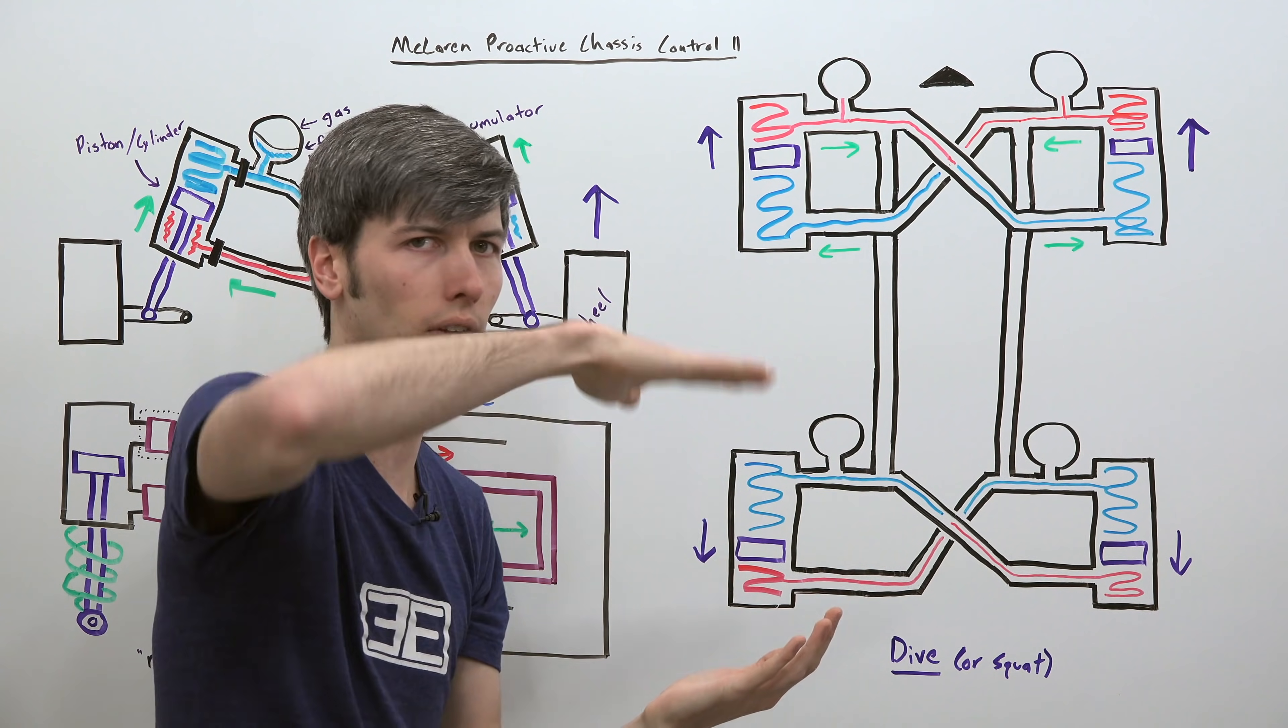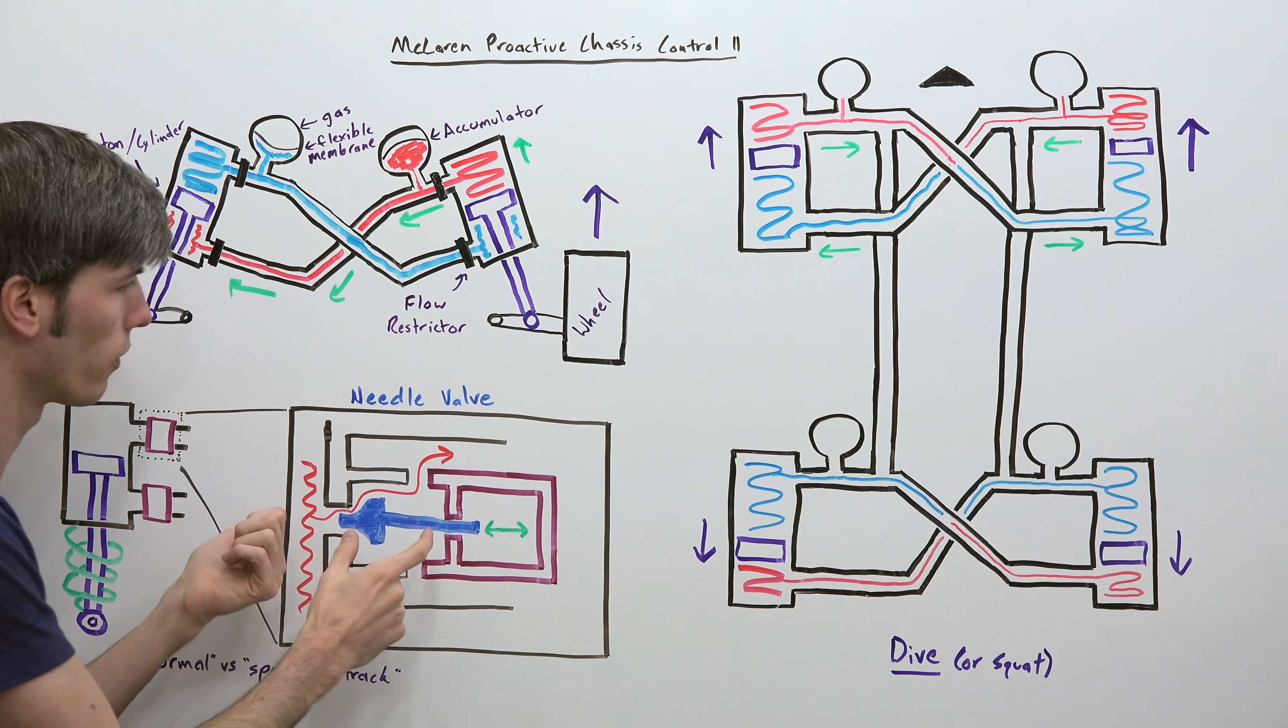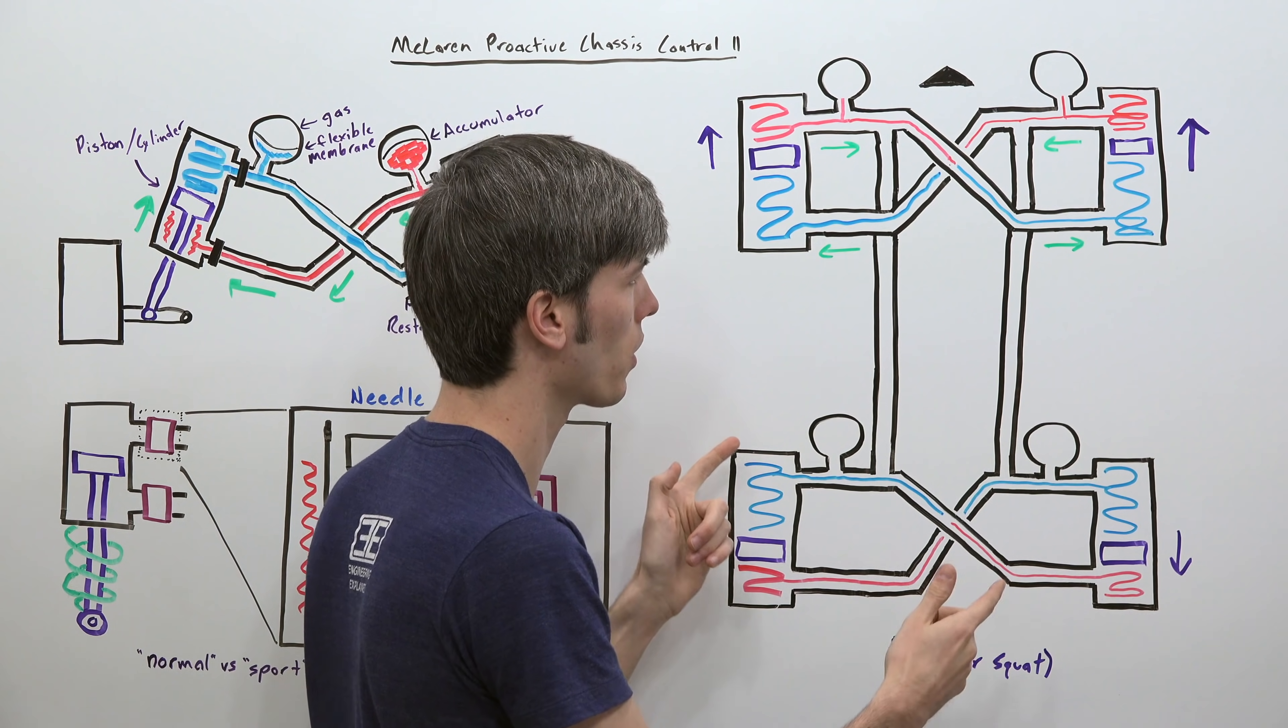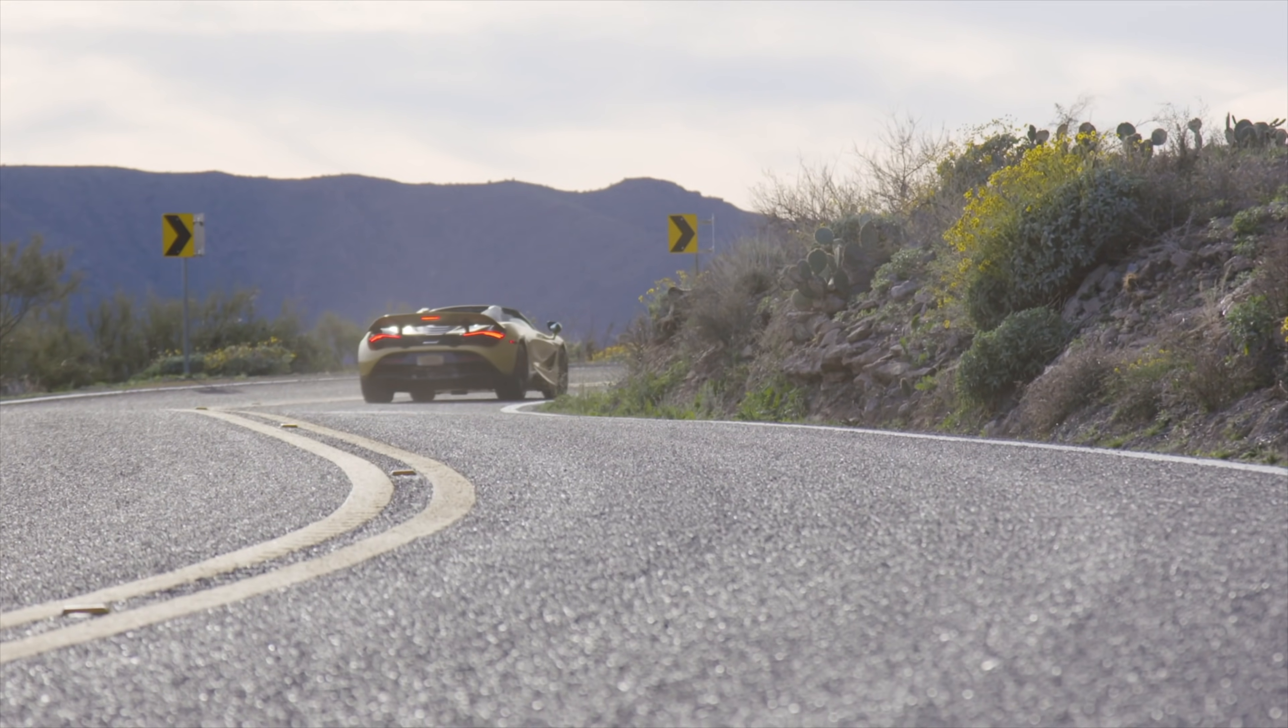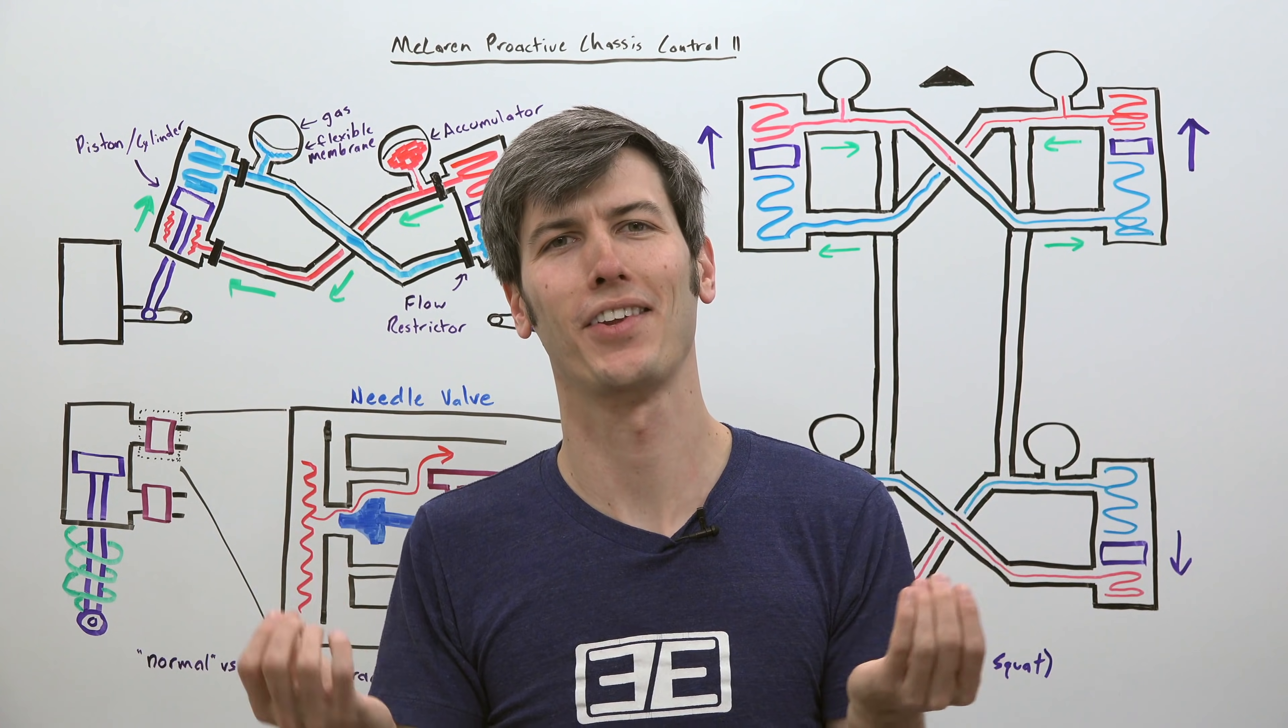Now of course if you're driving around on a track you don't want the car bouncing forward and back like that every time you're accelerating, braking. And so you can minimize this by changing this needle valve. So for that track mode you increase the resistance to allow that fluid flow to occur and thus you minimize how much dive or squat the vehicle actually has.